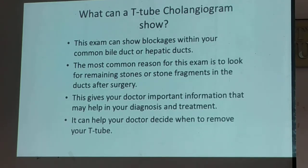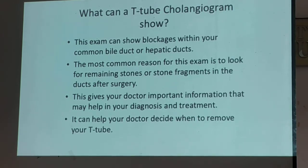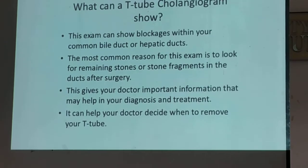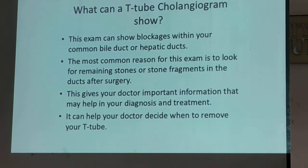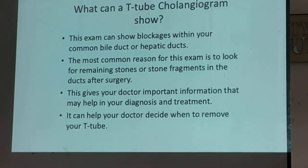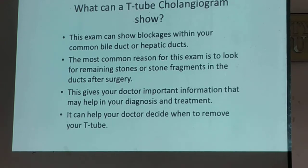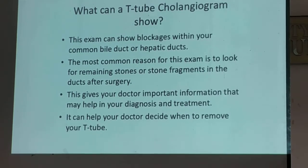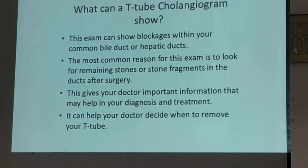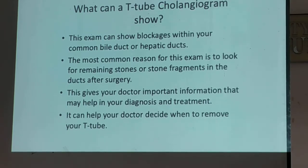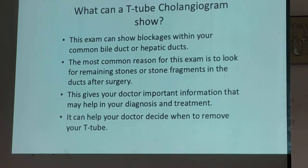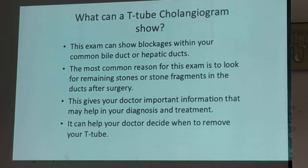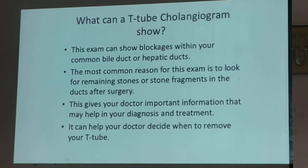Usually, what you call the procedure done at the OR during cholecystectomy — especially if the surgeon palpates something in the CBD — they usually do a T-tube cholangiogram intraoperatively. If you suspect a stone, they would ask the technologist to come up to the OR with a C-arm and do an instant T-tube cholangiogram.